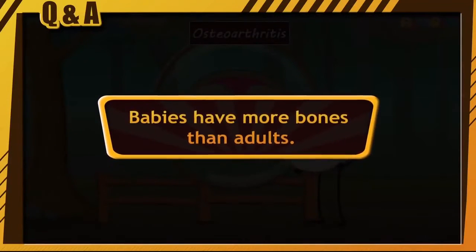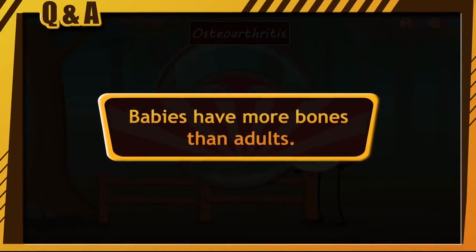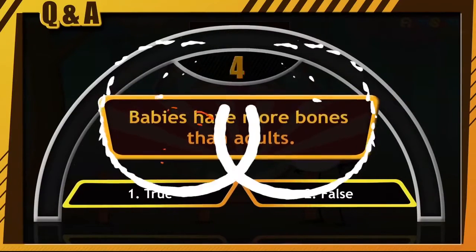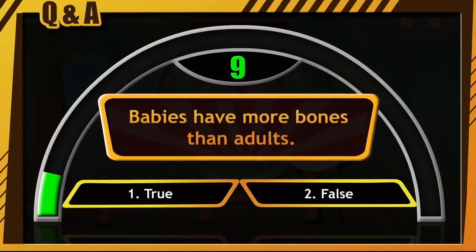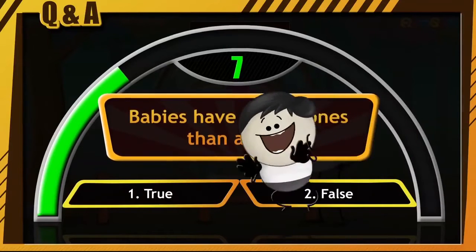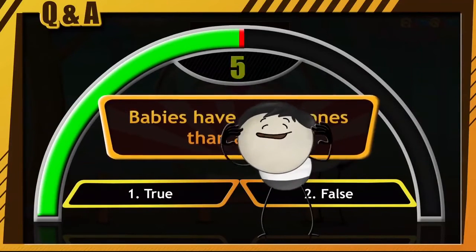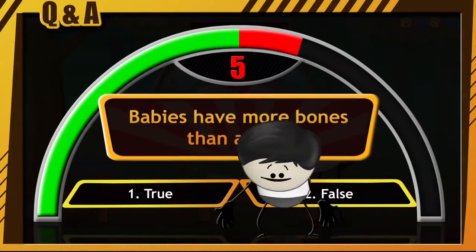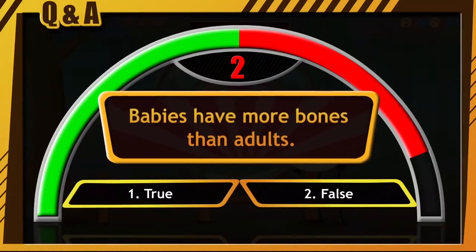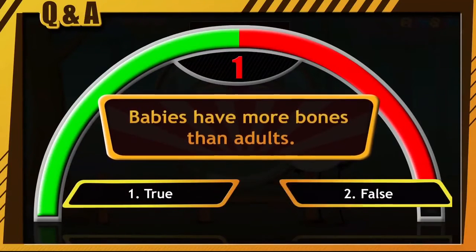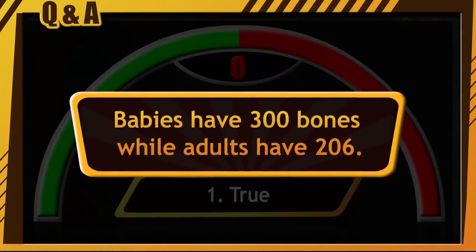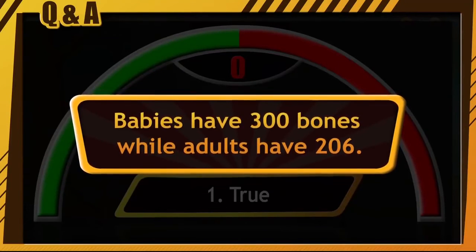Babies have more bones than adults — true or false? Your time starts now. Get that brain working and write your answer in the comment section. It is true. Babies have 300 bones while adults have 206.